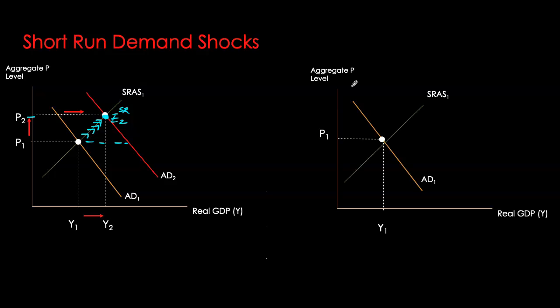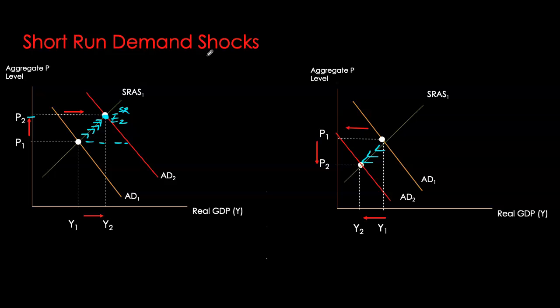Conversely, if you have a negative demand shock, it will cause your aggregate demand curve to decrease. Examples could be a stock market crash causing household wealth to go down, or firms losing business confidence and declining in their investment activity. As aggregate demand decreases, it puts downward pressure on the price level. And as price level goes down, short-run aggregate output supply decreases, and our new equilibrium gives us a lower price level and a lower level of GDP.